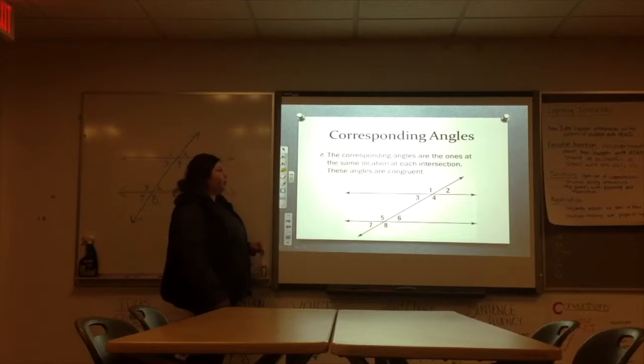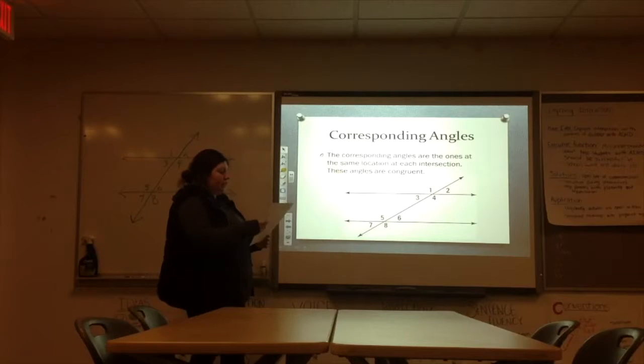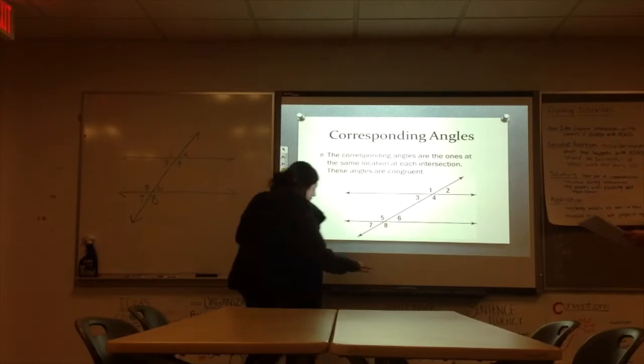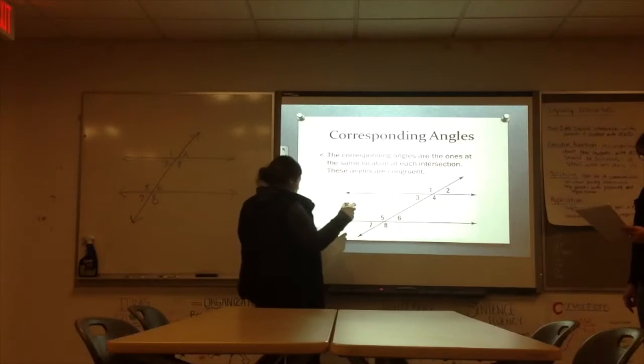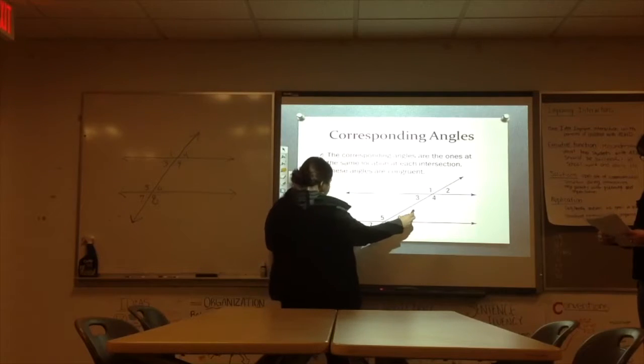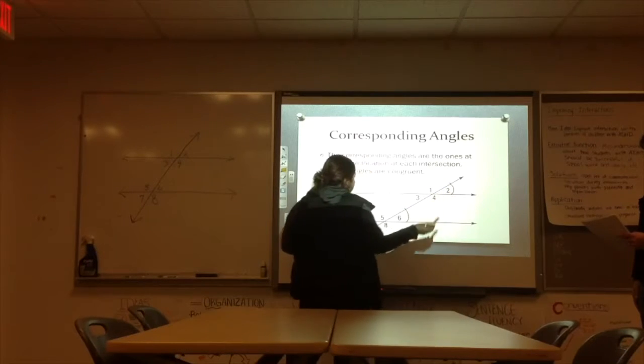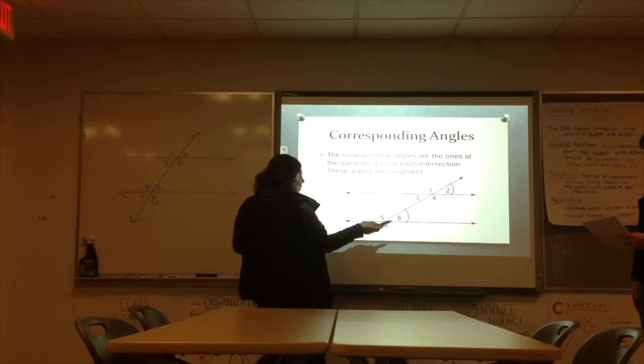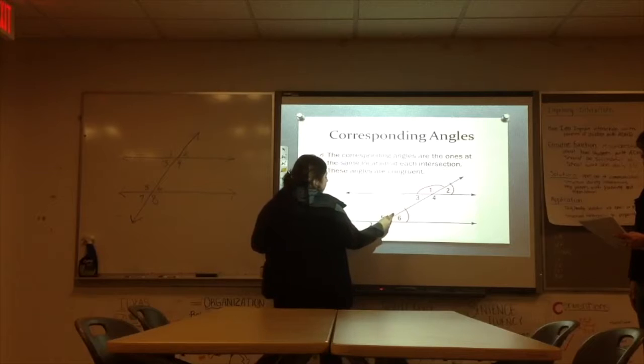Alright, so next we're going to look at our corresponding angles. Corresponding angles are the ones of the same location at each intersection. Alright, so here we have our two intersections. They're going to be the same location. So 2 and 6 are corresponding angles. 1 and 5 would be corresponding angles.